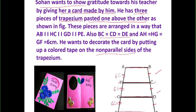Before discussing the question, let us recall what a trapezium is. A trapezium is a shape which has one pair of opposite sides parallel to each other and the other pair is non-parallel. Here we can see AB is parallel to HC, which is parallel to GD, which is parallel to FE — so there are three trapeziums. Now let us see the first question.